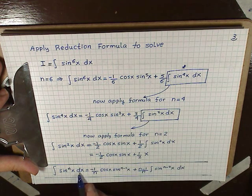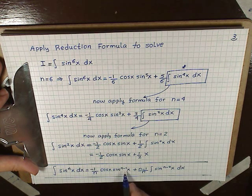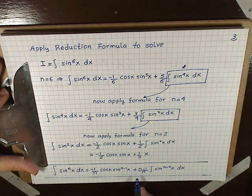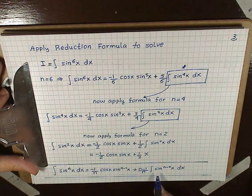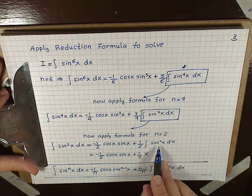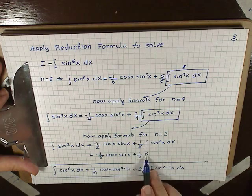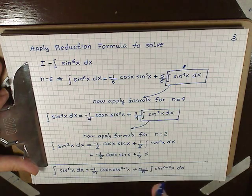Integral of sin²(x) dx = -1/2 cos(x) sin(x) plus 1/2 times the integral of sin^0(x) dx. But sin^0(x) is just 1, and when we integrate 1 dx we get x.